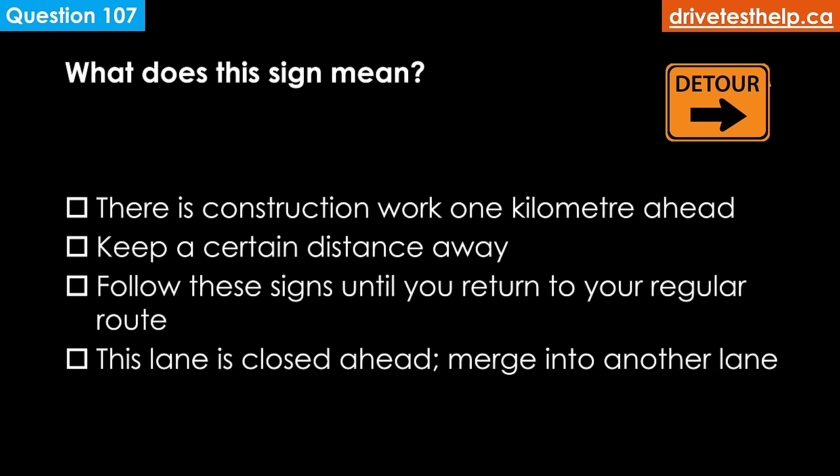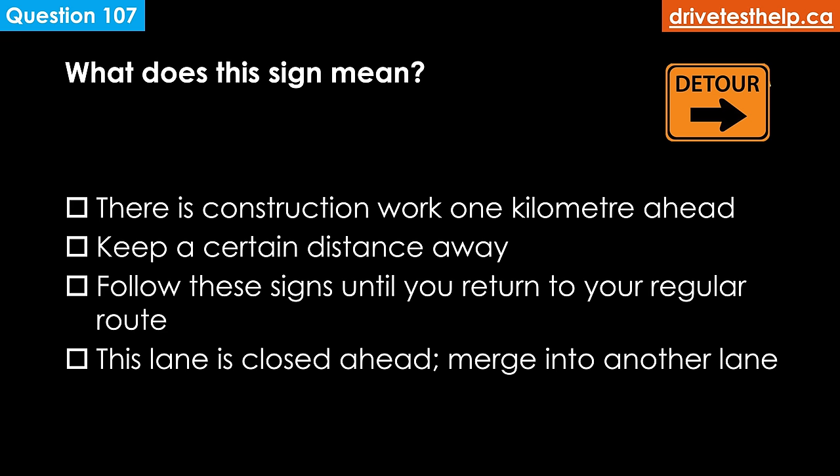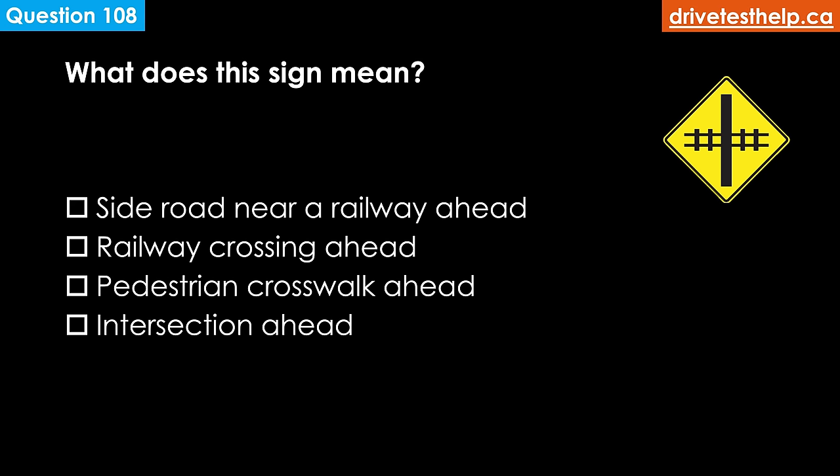What does this sign mean? Options: there is construction work one kilometer ahead; keep a certain distance away; follow these signs until you return to your regular route; this lane is closed ahead — merge into another lane. The correct answer is follow these signs until you return to your regular route. This is a temporary condition sign used for road work zones, diversions, detours, lane closures, or traffic control people on the road. This particular sign is a detour marker — keep following these detour markers until they return you to your regular route.